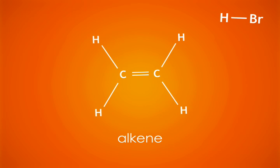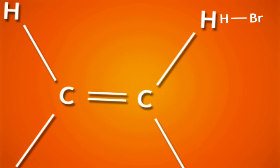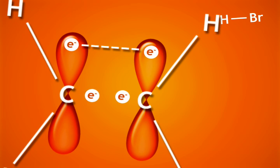Remember that a double bond contains one sigma bond and a weaker pi bond. Weaker because their orbitals do not overlap.